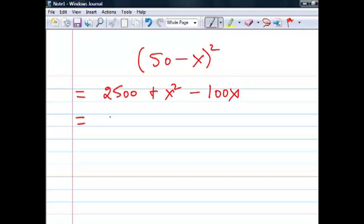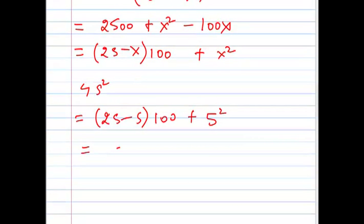Now it can be again written as (25-x) into 100 plus x². Now if I have to do the 45 square, it's simple. I have to write 25 minus 5 into 100 plus 5 square. This is equal to 2025.